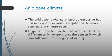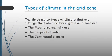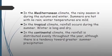The arid zone is characterized by excessive heat and inadequate, variable precipitation or rainfall. However, contrasting climates also occur. In general, these climate contrasts result from differences in temperature, the season in which rain falls, and the degree of aridity. The major types of climate in the arid zone are: one, the Mediterranean climate; two, the tropical climate; and lastly, the continental climate.